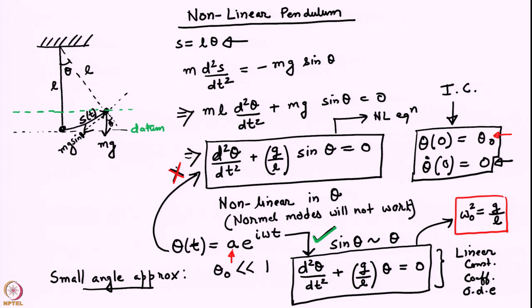Before we go further to discuss the solution of the non-linear pendulum in terms of elliptic functions, notice that the frequency of the linearized pendulum is purely a function of the system parameters — the acceleration due to gravity g and the length L of the pendulum string, which we have assumed to be inextensible. In particular, the natural frequency ω₀ is independent of θ₀, the initial angular displacement.